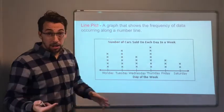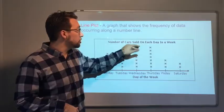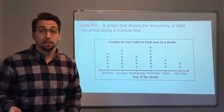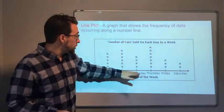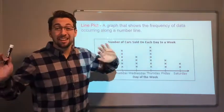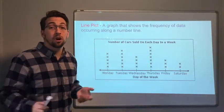So this is another dot plot. Number of cars sold on each day in a week. So Monday, Tuesday, Wednesday, Thursday, Friday, Saturday. Sunday's not even on here. They're closed. No cars are sold.